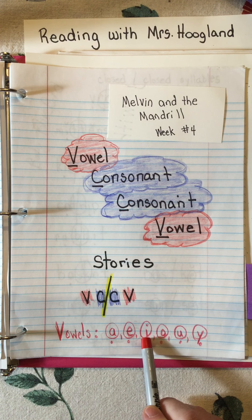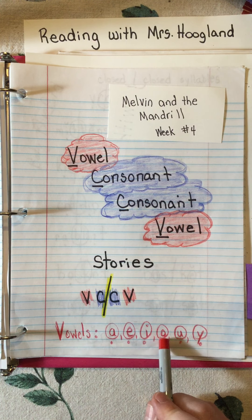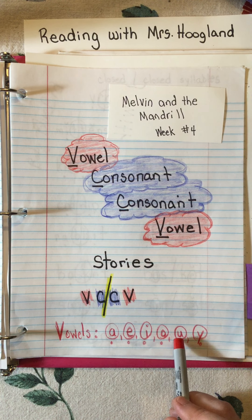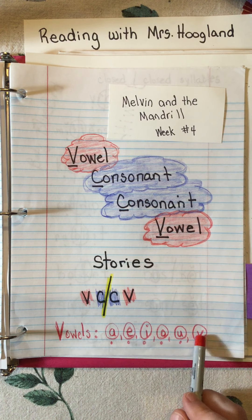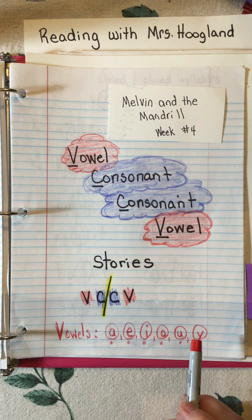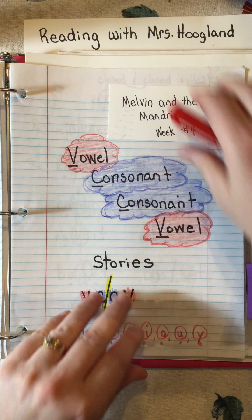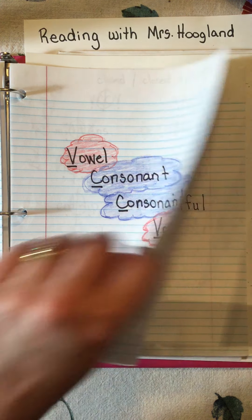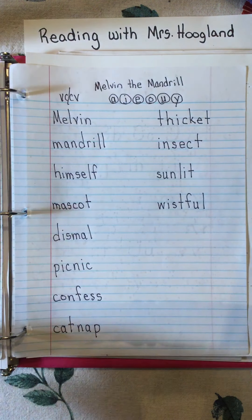I is going to say /i/ or /eye/. O is going to say /oh/ or /o/. U is going to say /uh/ or /you/. And Y as a vowel is going to say /i/, /eye/, or /ee/. All right, here we go friends - we are going to work on the story.